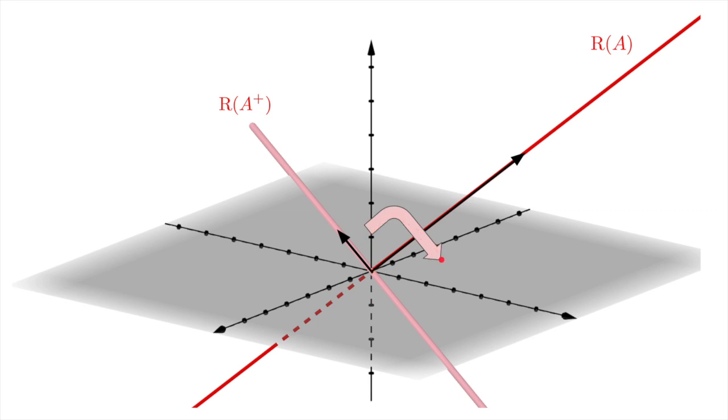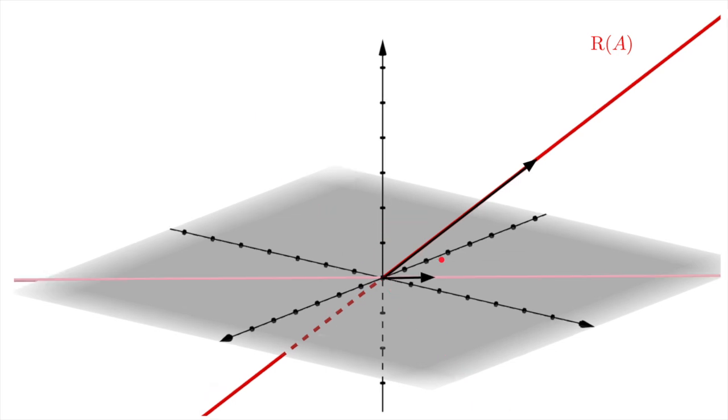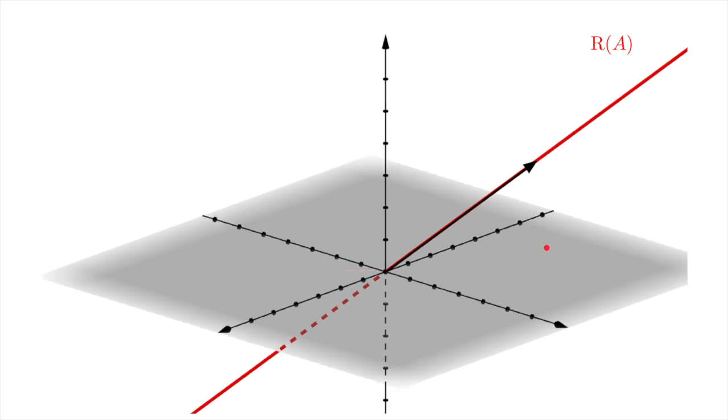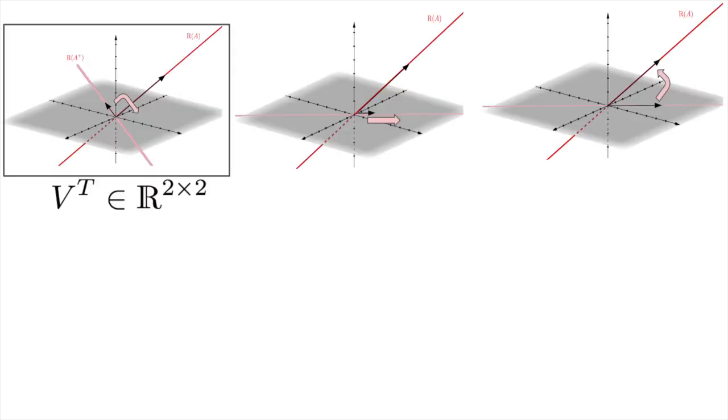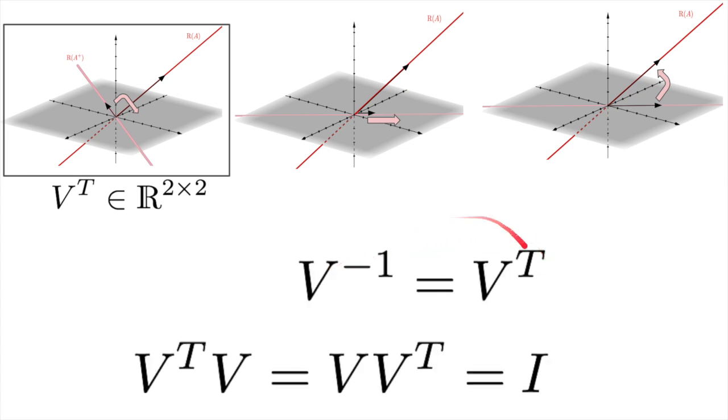First is a rotation in the domain of A, here at the xy plane, so that the range of A+ ends up pointing in the same direction as the range of A, but in the xy plane. Next, we're going to scale up all the vectors in the rotated subspace, so that the vectors line up with the ones in the range of A. Finally, we're going to do a rotation in R3 to transform the rotated and scaled vectors into the range of A. Because each of these transformations is a linear transformation, we can describe each with a matrix. We represent the first rotation with a matrix V transpose. It just rotates the range of A+ within the input space. V is an orthogonal matrix, so its columns are all orthogonal and of unit length. This means both that V is invertible and that its transpose is its inverse, so V transpose times V is the identity. This fact about orthogonal matrices will come in handy later.